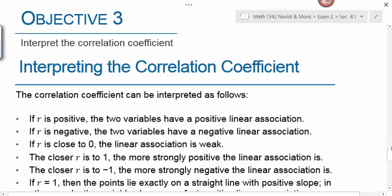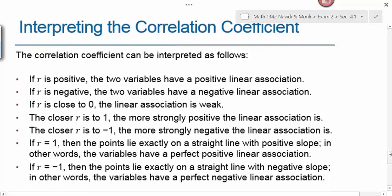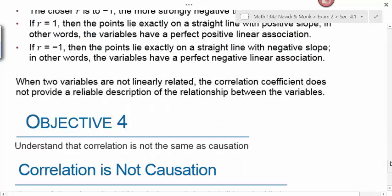Objective 3 is interpreting the correlation coefficient. This reviews everything I told you earlier. If r is positive, the two variables have a positive linear association. If r is negative, they have a negative linear association. If r is close to 0, the linear association is weak. The closer r is to 1 or negative 1, the stronger the linear association. If r is exactly equal to 1 or negative 1, the points lie exactly on a straight line and we have a perfect linear association. That's rare.